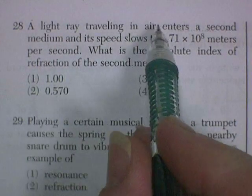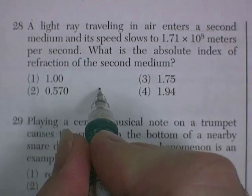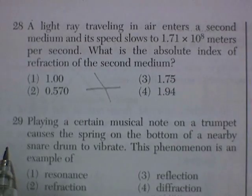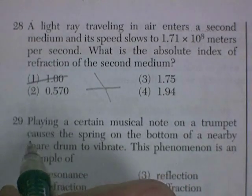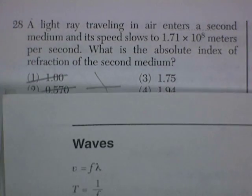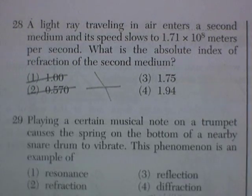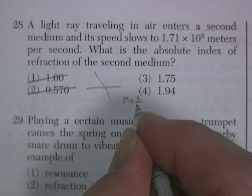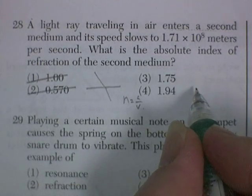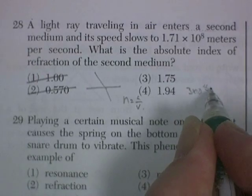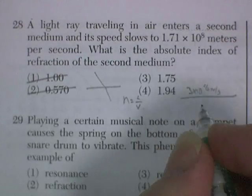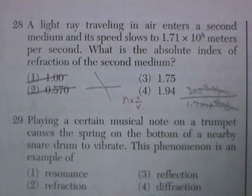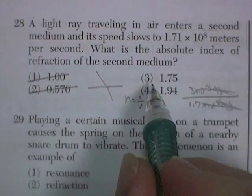28. A light ray traveling in air enters a second medium and its speed slows down. So, the index of refraction is greater than air. What's the absolute index of refraction of the second medium? Well, it's got to be more than one. The formula for the index of refraction, n is equal to c over v. So, it's the speed of light in a vacuum, 3 times 10 to the 8 meters per second, divided by the speed of light in this material, 1.7 times 10 to the 8 meters per second. So it's 3 divided by 1.7, and it's 1.75.